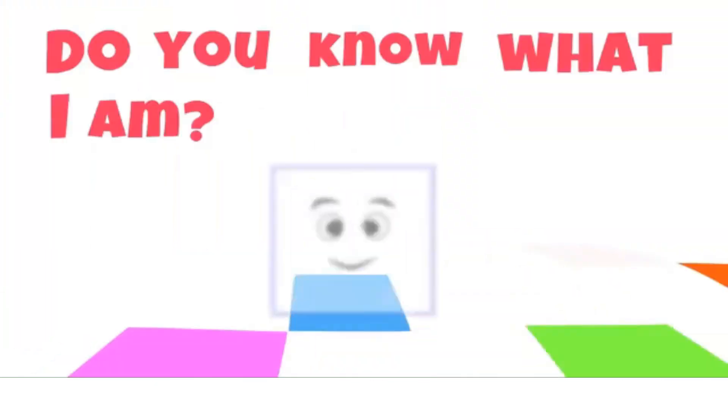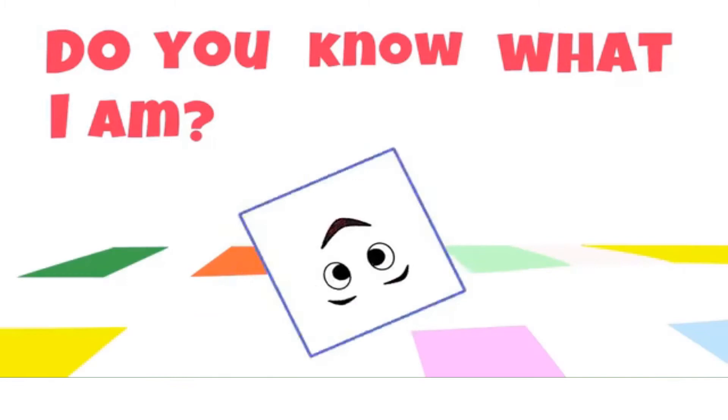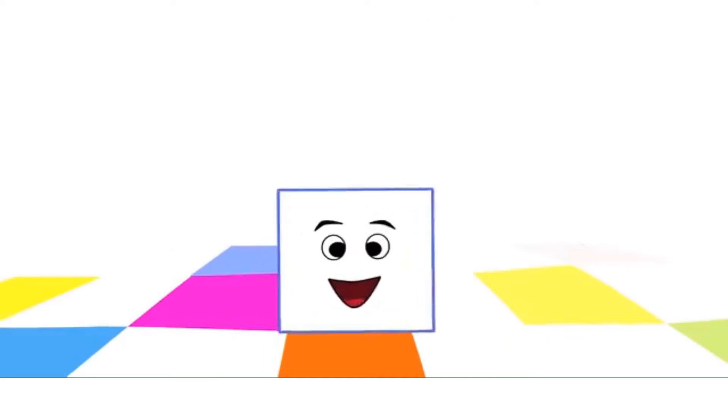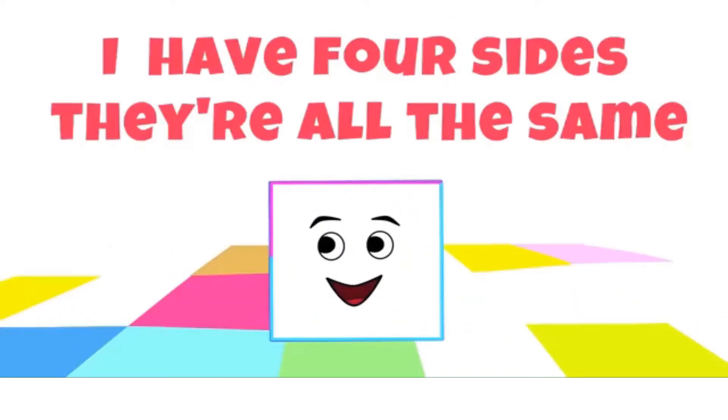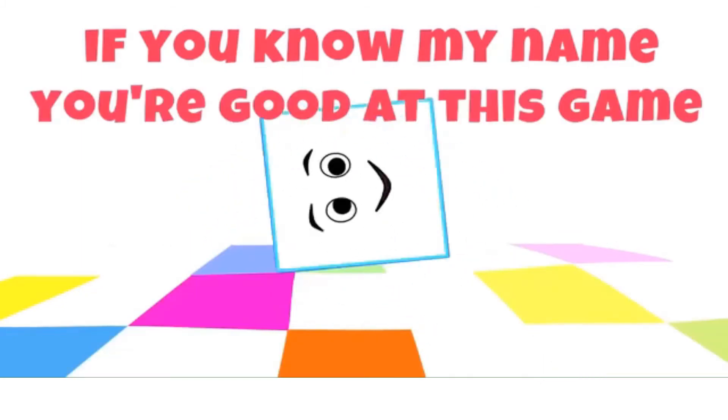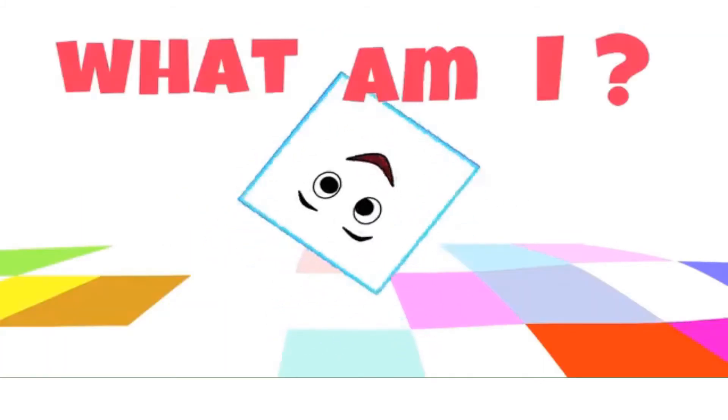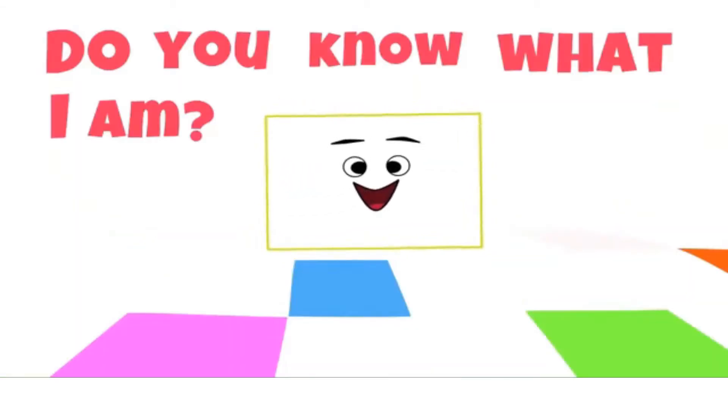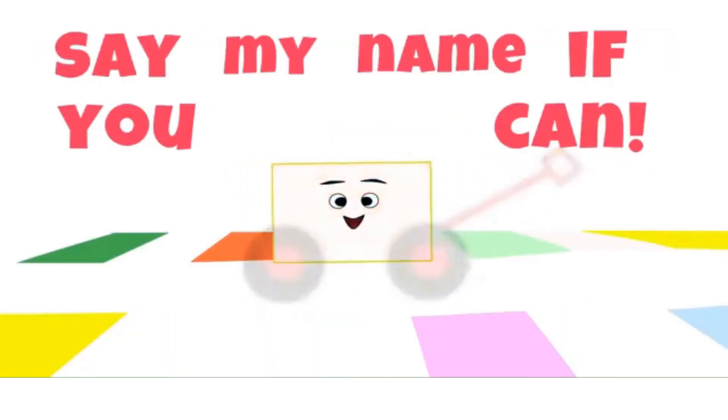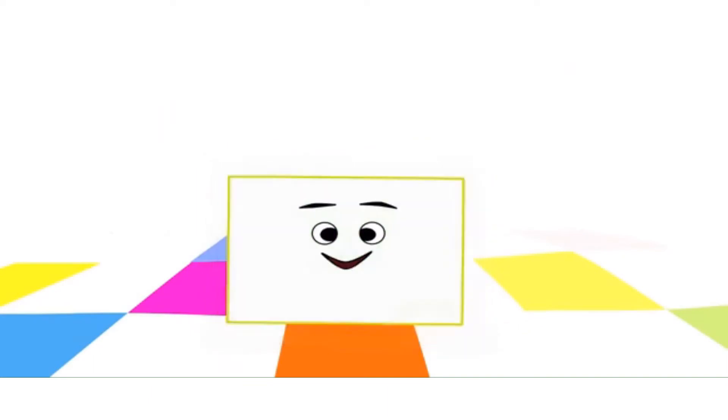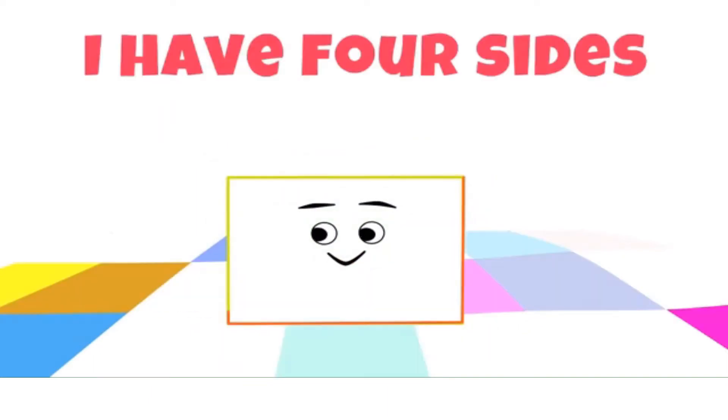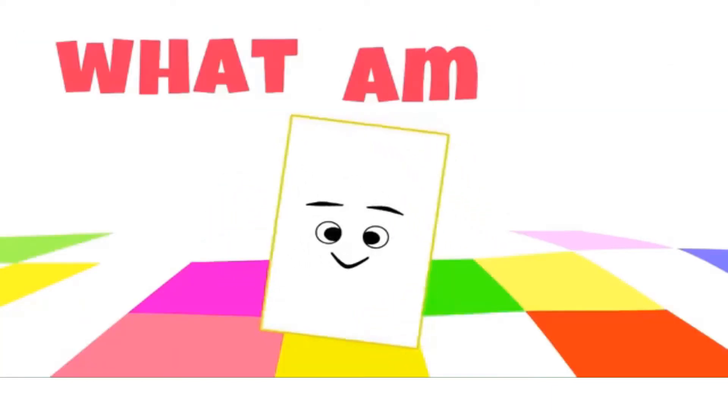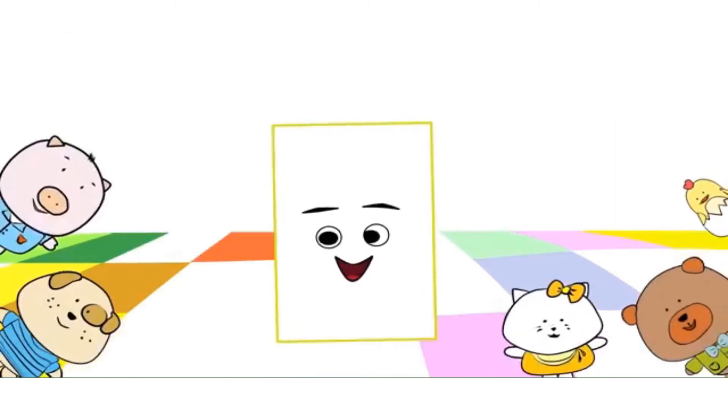Do you know what I am? Say my name if you can. I have four sides, they're all the same. If you know my name, you're good at this game. What am I? You're a square. Do you know what I am? Say my name if you can. I have four sides, like a square, but two sides are shorter, and I don't care. What am I? You're a rectangle.